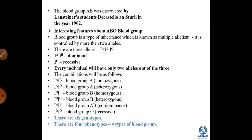The fourth blood group, AB, was discovered in 1902 by Landsteiner's students, De Castello and Sturli. The ABO blood group shows a type of inheritance known as multiple allelism, controlled by more than two alleles, as we studied in genetics.